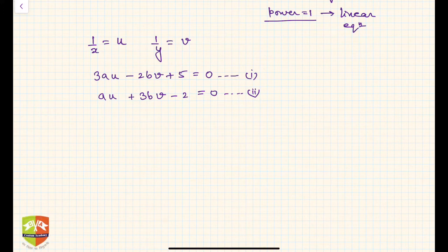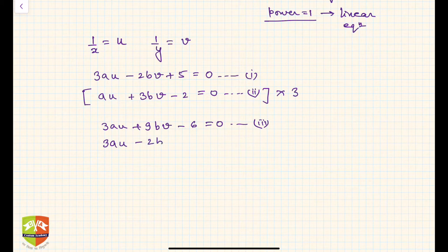To eliminate u, you have to multiply the second equation by 3. That will yield 3au plus 9bv minus 6 equals 0. This is equation number 3. And let us rewrite the first equation: 3au minus 2bv plus 5 equals 0, equation number 1.